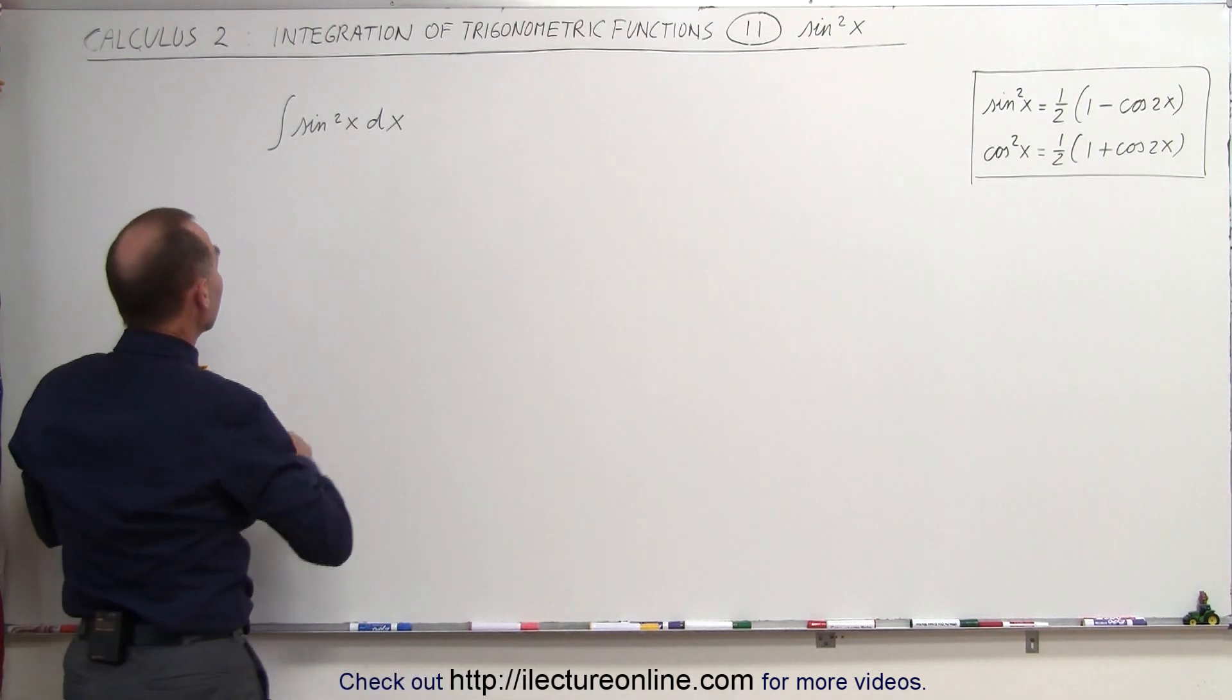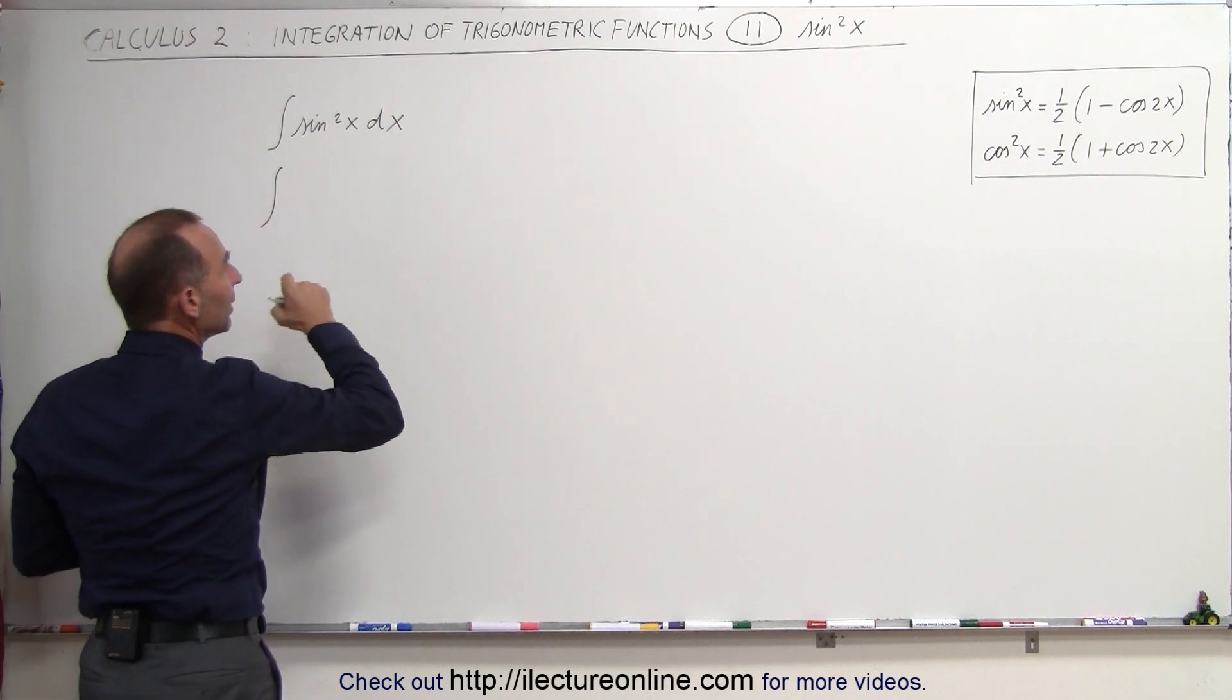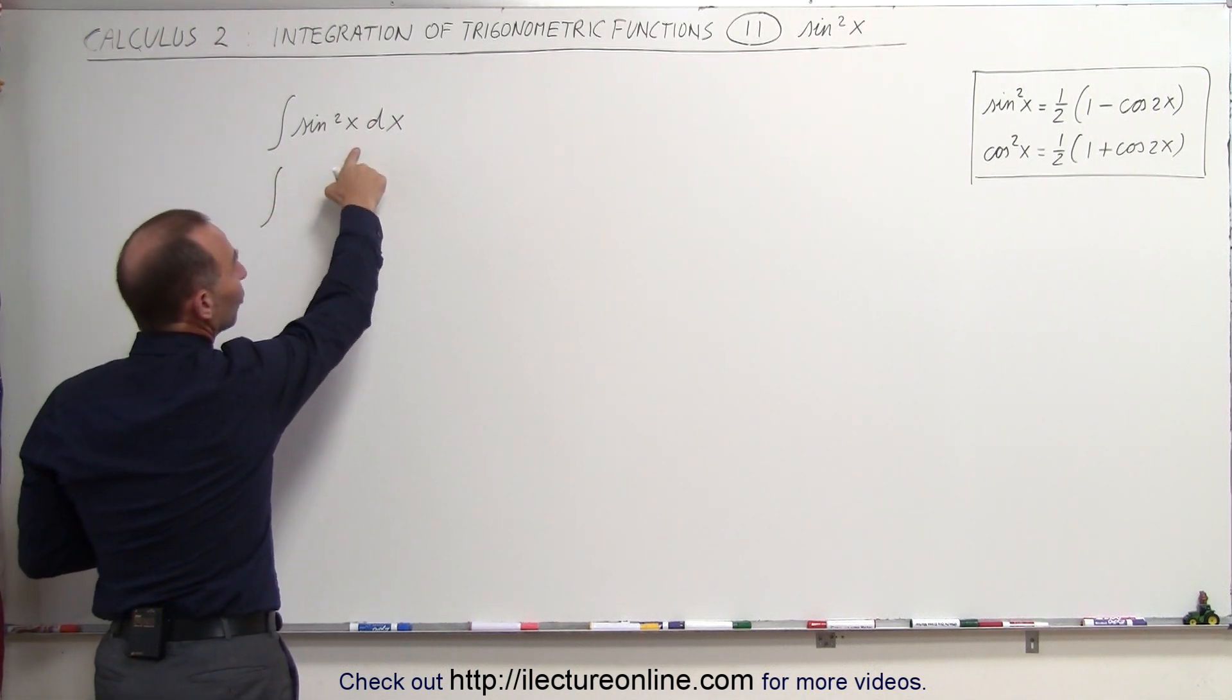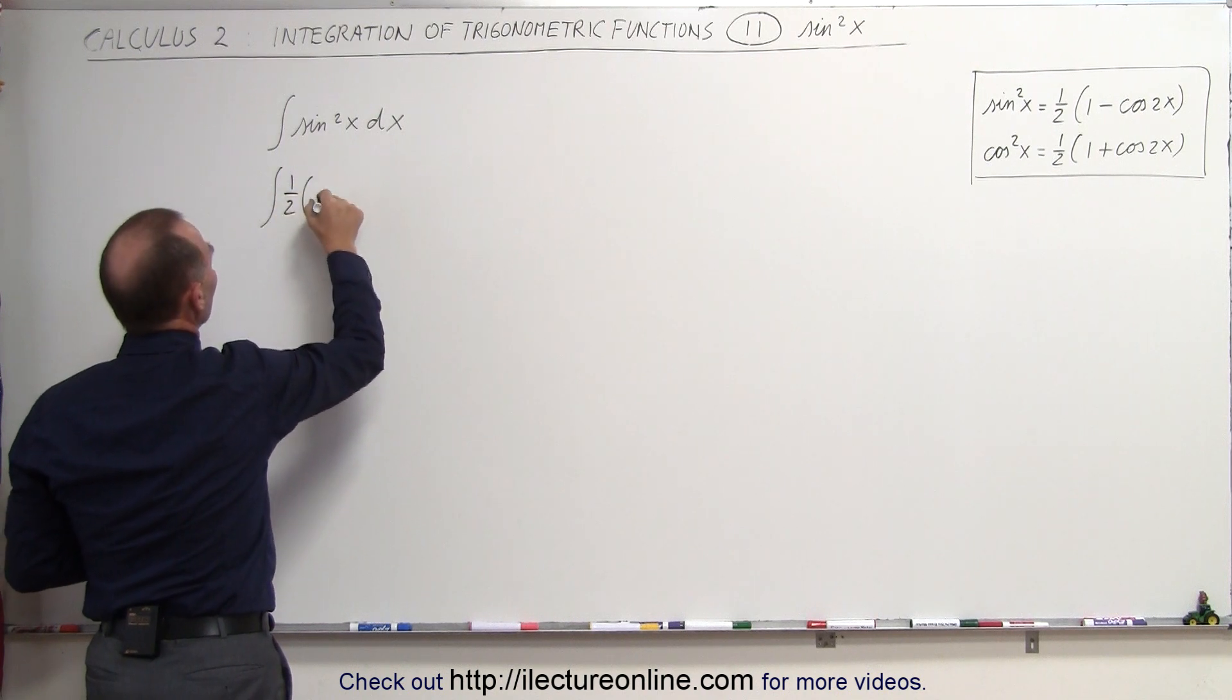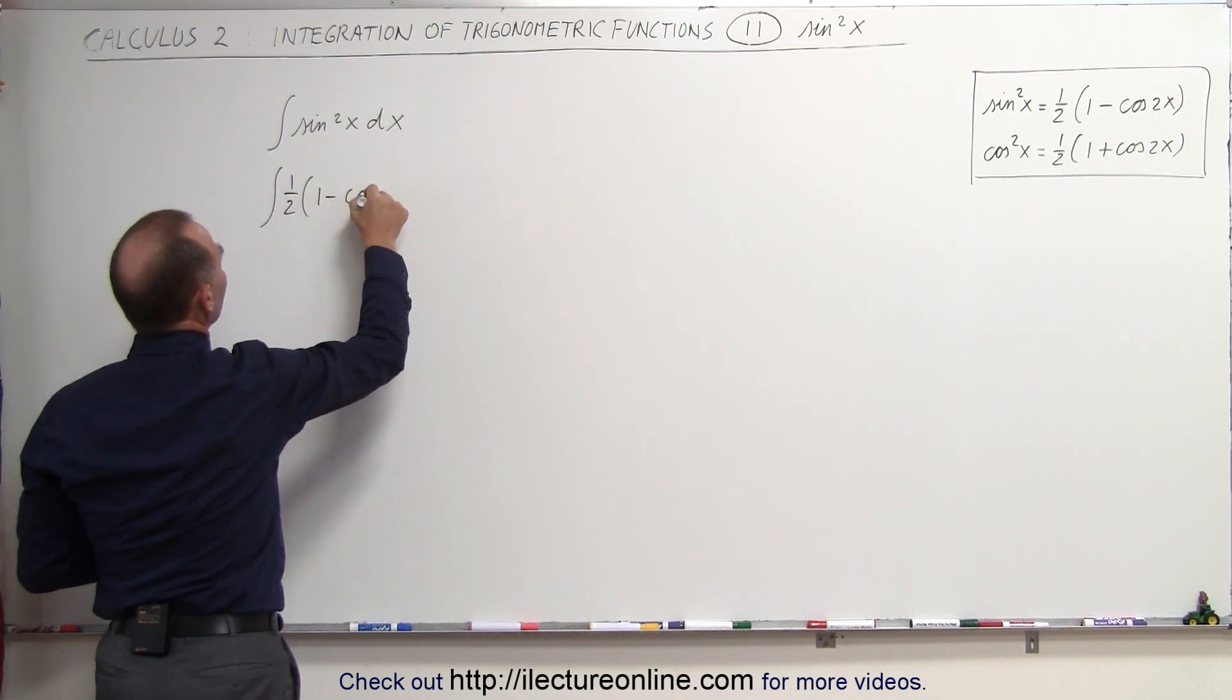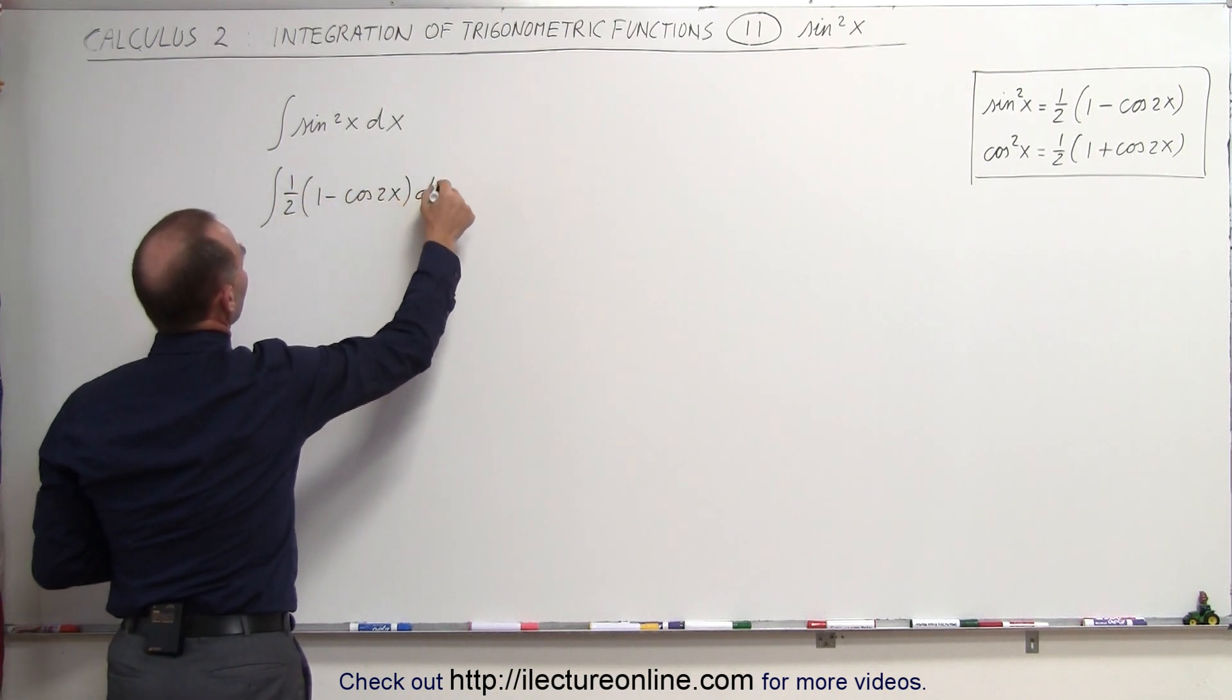So let's try that identity swap. We're going to now integrate. Instead of sine squared x, we're going to make it one-half times one minus cosine 2x dx.